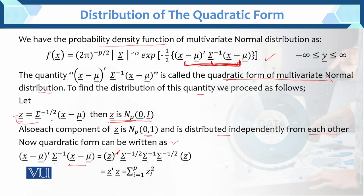So we have z' Σ^(-1/2) · Σ⁻¹ · Σ^(-1/2) z. The exponents combine: (−1/2) + (−1) + (−1/2) = −1 + (−1), and the sigma factors cancel out, giving us z'z. Further, this can be written as the sum from i = 1 to p of z_i squared.